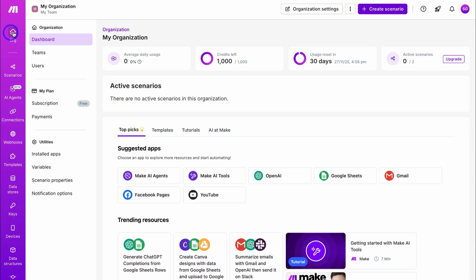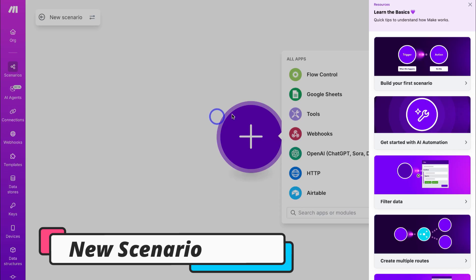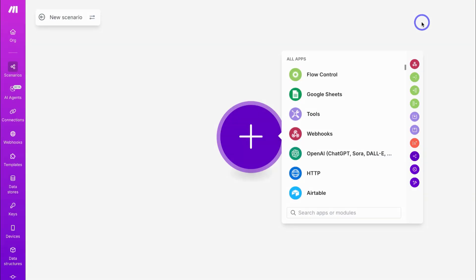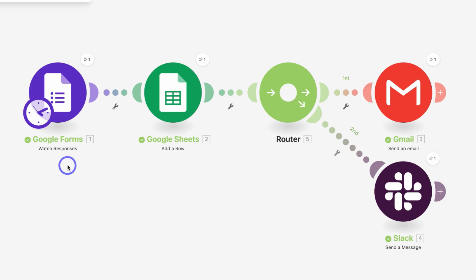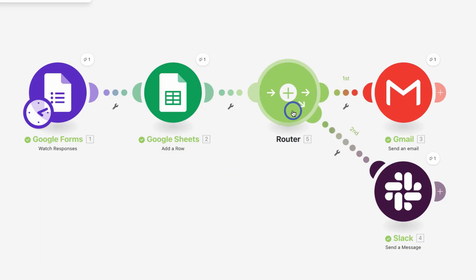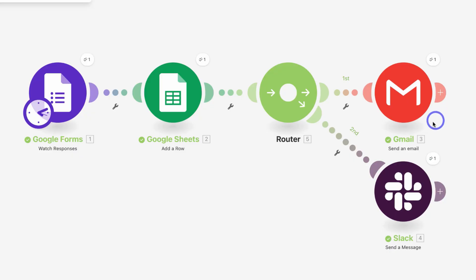Let's navigate back to our dashboard and go ahead and create a new fresh scenario. Navigate down and click on Build from Scratch. For the purpose of today's example, we're going to create a workflow that connects Google Forms to Google Sheets, as well as Gmail and Slack. We're going to use Google Forms to capture new client projects. The data captured from Google Forms will be sent to Google Sheets — my Google Sheets CRM template. Then we'll automatically send a thank-you email from Gmail, and send a Slack notification to a channel to notify our team that a new project has been received.